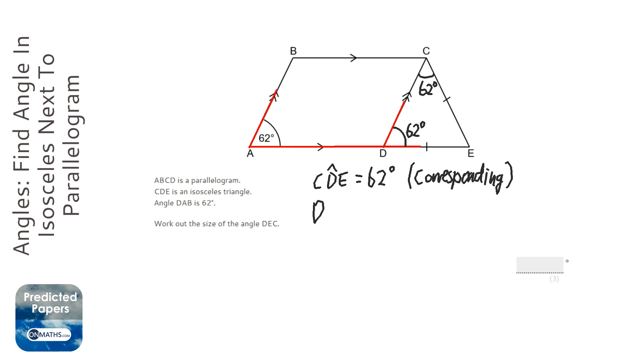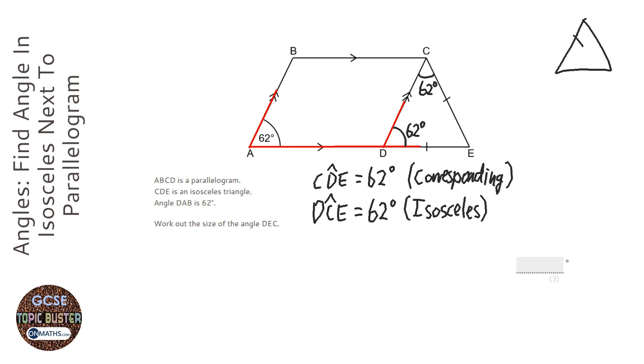OK, and this time it's because the bottom two angles in an isosceles triangle are always equal. Now by bottom, I always imagine isosceles being like this. OK, so it's always the bottom two. Clearly that isosceles is not like that, but in my head an isosceles is always this way up, with the two equal lengths left and right. So it's the bottom two always equal. So that's going to be 62 as well.